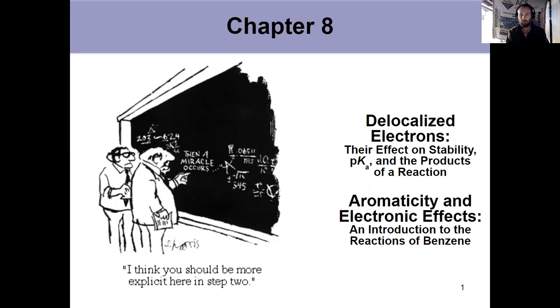We saw that way back in Chapter 2 when talking about the acidity of a carboxylic acid versus an alcohol, because in both situations, the acidic hydrogen is on oxygen, but delocalized electrons changes the pKa by tenfold at 10 pKa units.